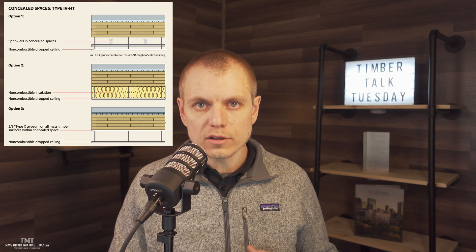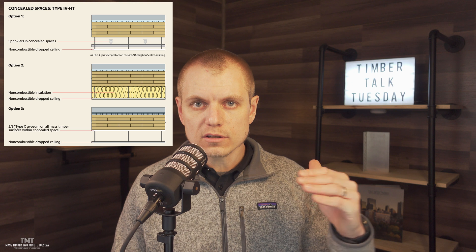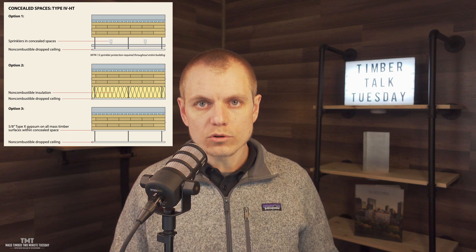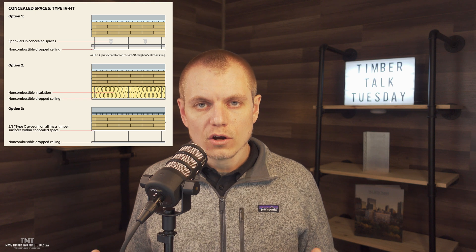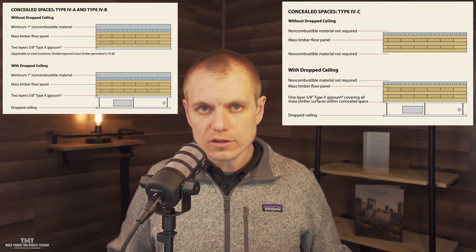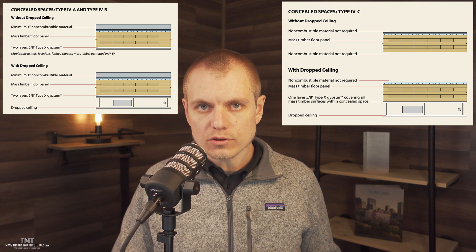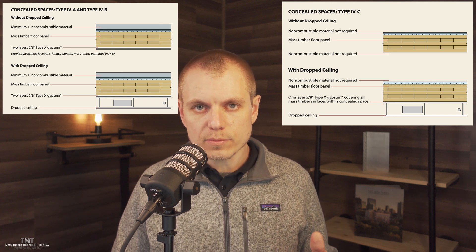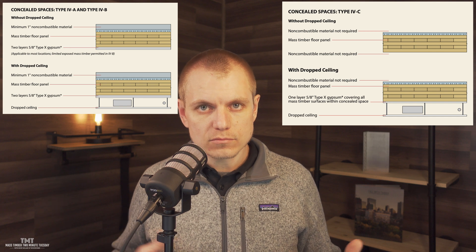In Type 4HT construction we can have concealed spaces, but we must comply with one of three options for protecting the timber within that concealed space: either using non-combustible insulation to fill the cavity between the drop ceiling and the underside of the mass timber floor panel, having sprinkler protection within that concealed space, or encapsulating the underside of the mass timber floor panel. In Types 4C, 4B, and 4A, concealed spaces are also allowed; however, there is a prescriptive requirement across the board that we encapsulate the mass timber within that concealed space with a minimum layer of non-combustible elements.